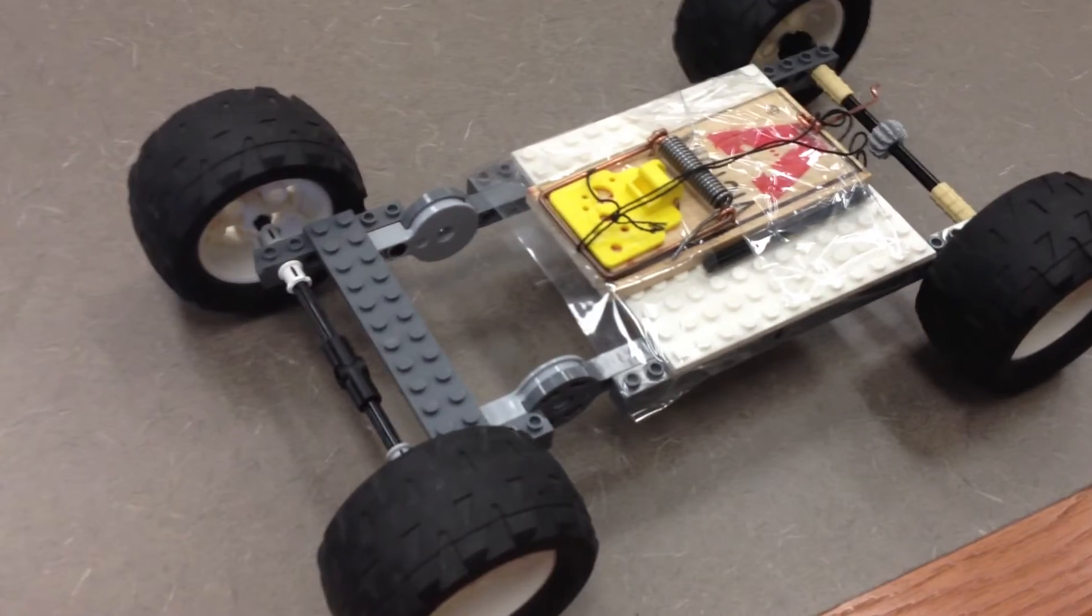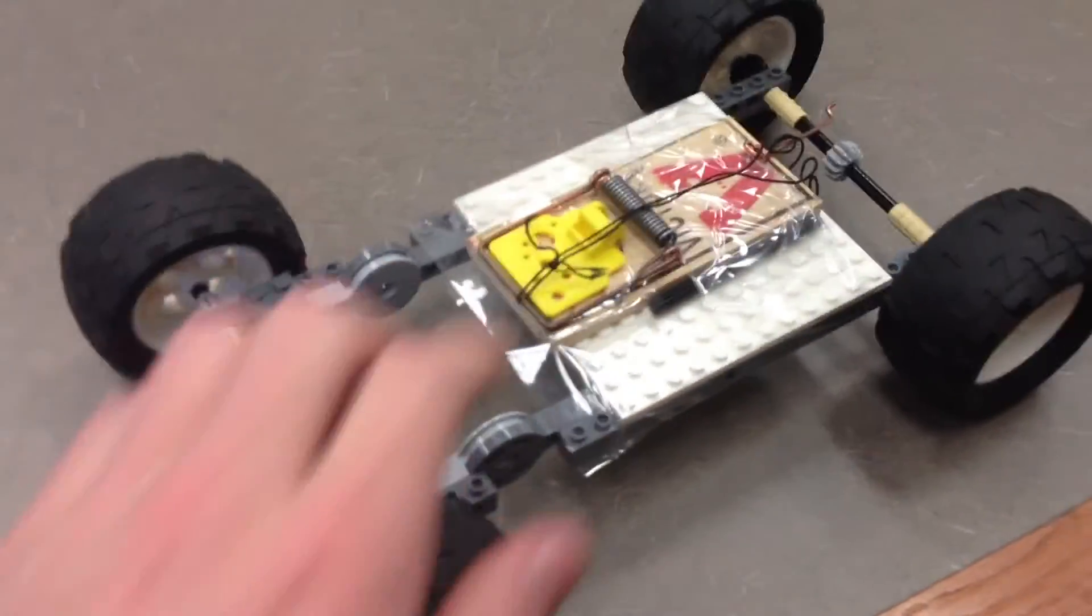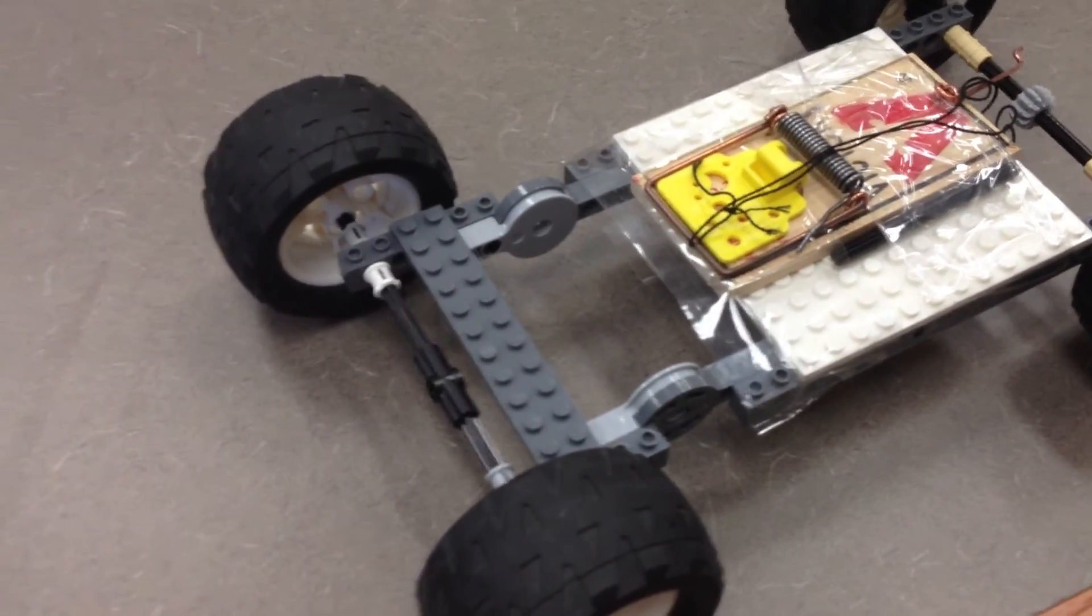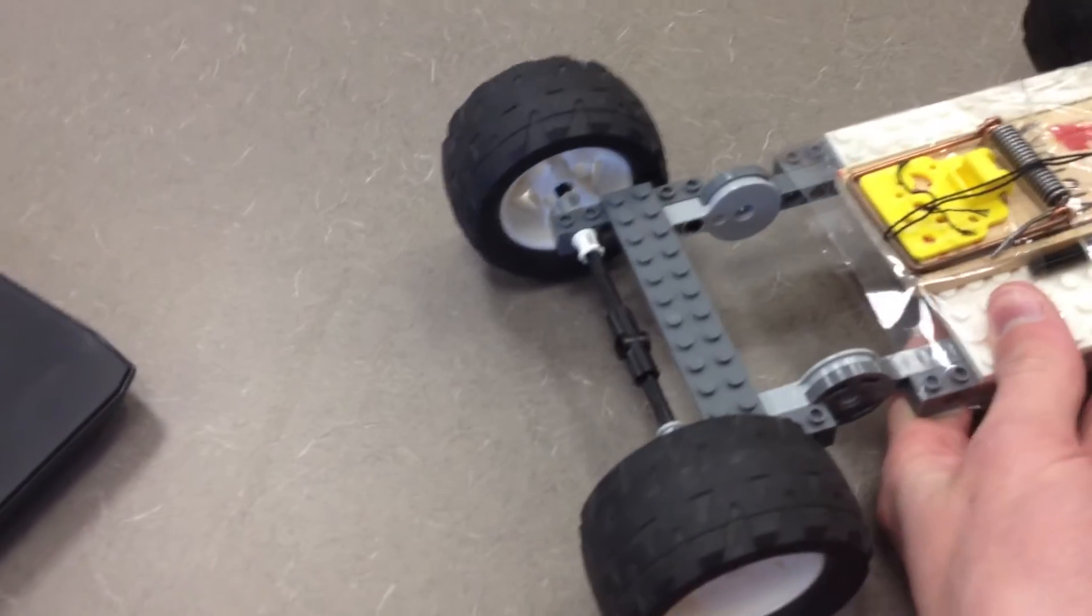Newton's second law applies to the formula F equals ma. Since we have to use a certain kind of mousetrap, we can't change the force in the system. By keeping the mass of the car down, we can increase acceleration.